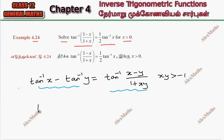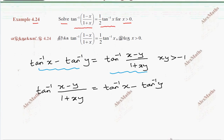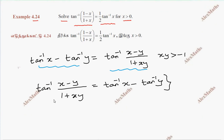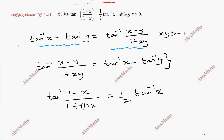Now, since the expression tan inverse (1 minus x) by (1 plus x) is already in the form tan inverse (x minus y) by (1 plus xy), we can apply the reverse of this formula. The denominator is 1 plus x, and looking at the right-hand side, which is half tan inverse x, we can match the form.